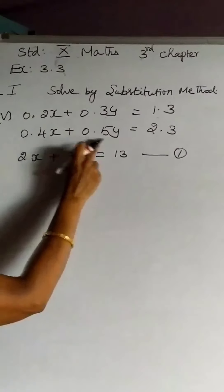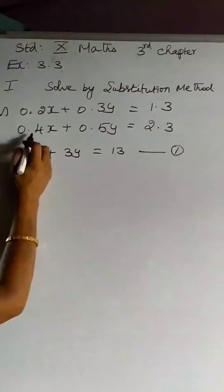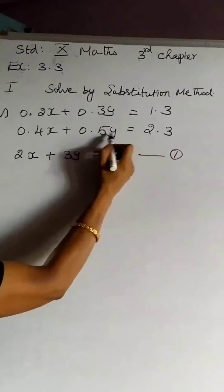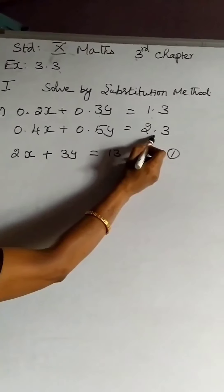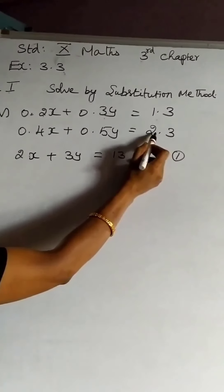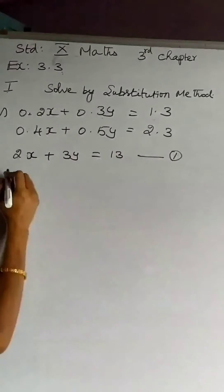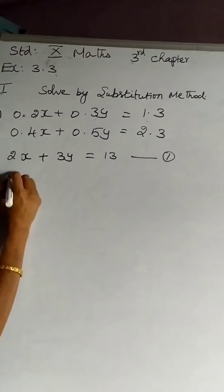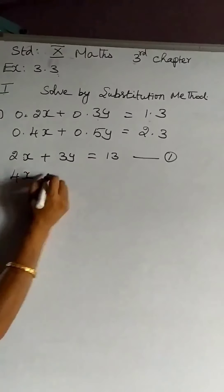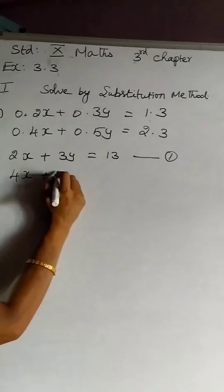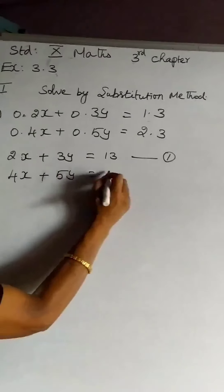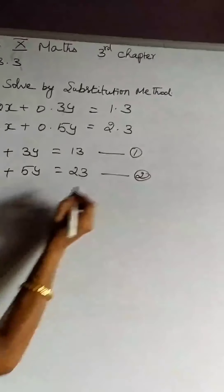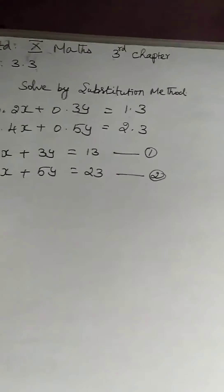In the second equation also, you can find there is only one decimal place on the left side as well as on the right side. So eliminating the decimal point from each and every term, we get 4x + 5y = 23. I take this as the second equation.